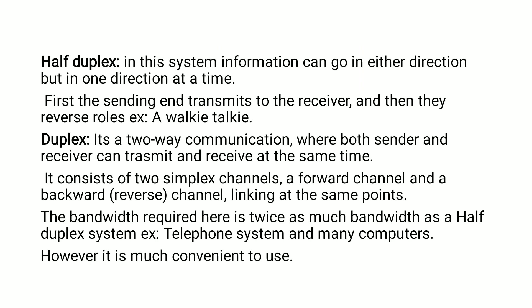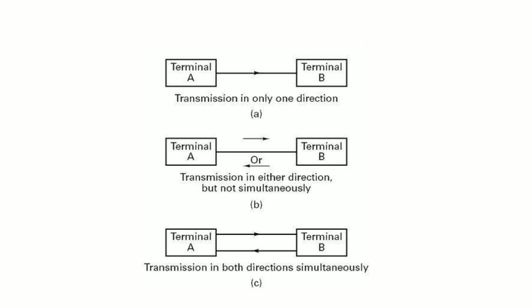In simplex mode, data transmission is unidirectional — information can be sent in one direction only. Simplex lines are also called receiver-only, transmit-only, or one-way-only lines. A radio station is an example of simplex mode because the radio station sends signals to the audience but never receives signals from them, making it a one-way transmission.